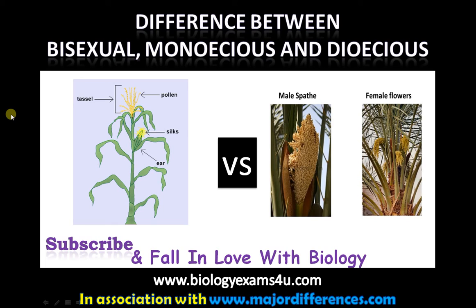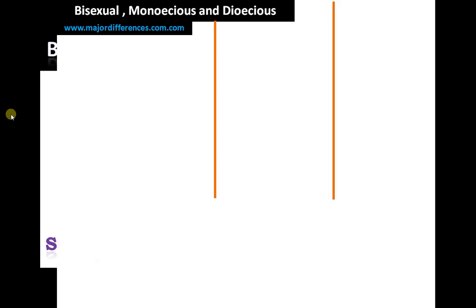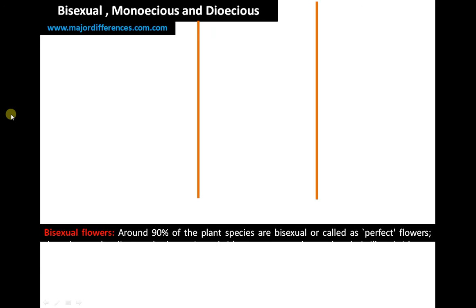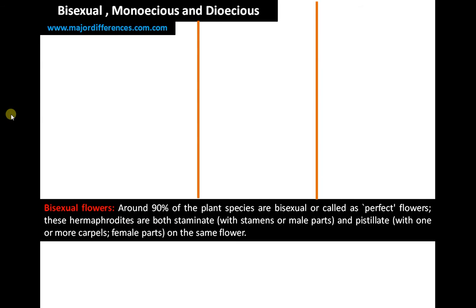Today we are going to discuss three confusing terms in biology: bisexual, monoecious, and dioecious. Within two minutes, first of all starting with bisexual flowers — nearly 90% of plant species are bisexual.